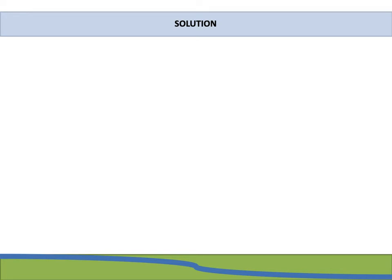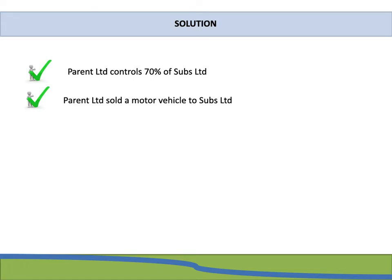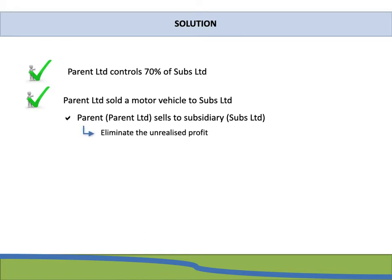Looking at the thought process: Parent Limited controls 70% of Subs Limited. Parent Limited sold a motor vehicle to Subs Limited, meaning the parent sold property, plant and equipment to the subsidiary. Very importantly, we need to eliminate the unrealized profit because there was a gain made on the sale. Because it is the parent selling to the subsidiary, there will be no portion allocated to the non-controlling interest.